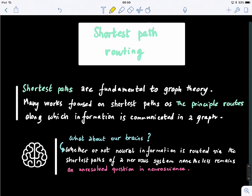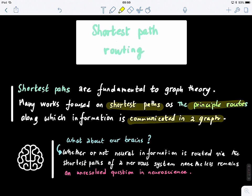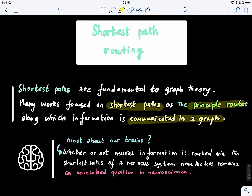Now we will look at the shortest path and how we can find those optimal or shortest paths in a given graph. The concept of shortest path is very old, one of the most fundamentals of graph theory. Many works have focused on coming up with new ways and algorithms to identify shortest paths in graphs. These are basically the principal routes along which information is communicated in a graph - the most effective, the most efficient trajectories to traverse.